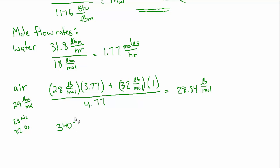And so the mole flow rate is going to be the mass flow rate 340 pounds per hour divided by that molecular weight, 28.84 pounds per mole. That makes 11.79 moles per hour. And now if we have 11.79 moles per hour of air, dry air, and 1.77 moles per hour,